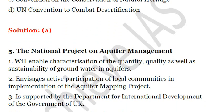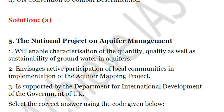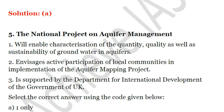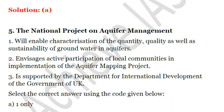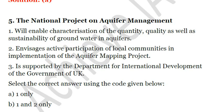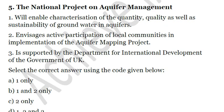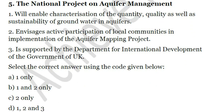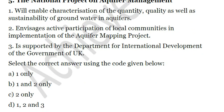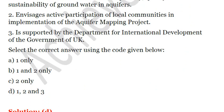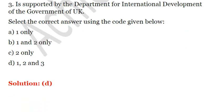The next question is on the National Project on Aquifer Management. First, it will enable characterization of the quantity, quality, and sustainability of groundwater in aquifers. Second, it envisages active participation of local communities in implementation of the aquifer mapping project. Third, it is supported by the Department for International Development of the Government of UK. All of these statements are correct, so the answer is D — that is 1, 2, and 3.